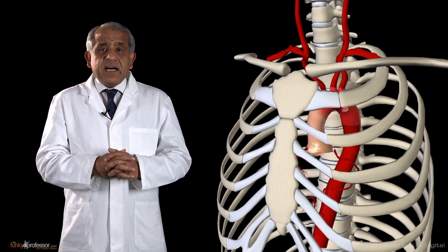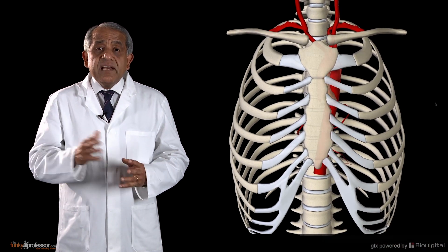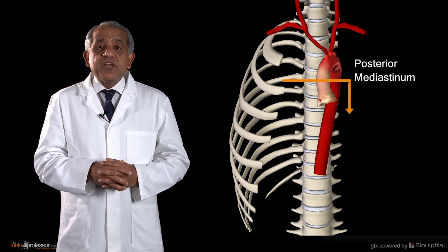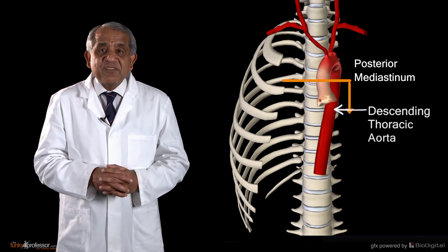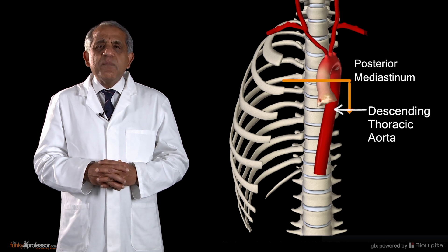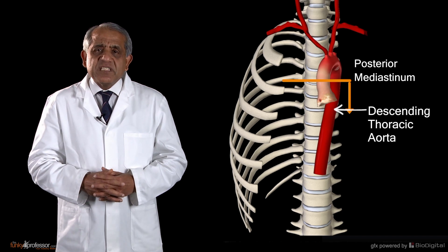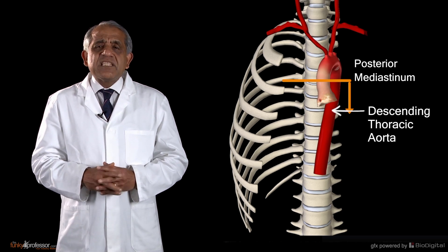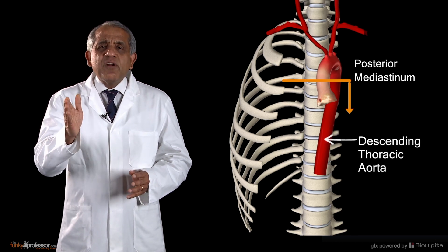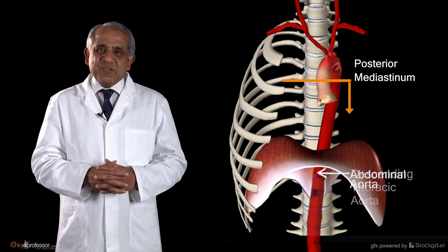The aortic arch crosses the superior mediastinum into the posterior mediastinum, left of the midline, and the moment it enters the posterior mediastinum it changes its name to the descending thoracic aorta. The descending thoracic aorta is for the most part a left-sided structure, lying to the left of the thoracic part of the vertebral column. Only at its very lower end does it more or less centre itself, where it crosses the diaphragm to become the abdominal aorta.